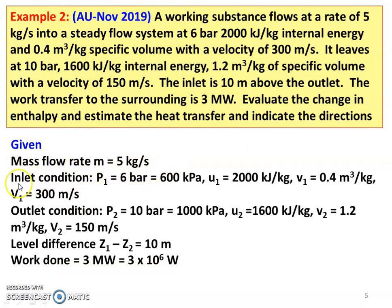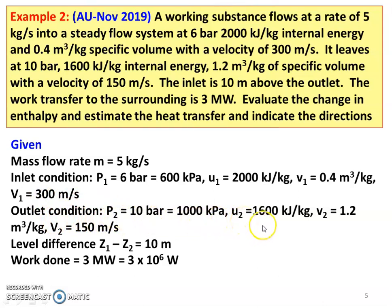Given data: mass flow rate M equals 5 kilograms per second. Inlet condition: P1 equals 6 bar, 600 kilopascal; internal energy U1 equals 2000 kilojoules per kilogram; specific volume 0.4 meter cube per kilogram; inlet velocity 300 meters per second. Outlet condition: P2 equals 10 bar, 1000 kilopascal; internal energy U2 equals 1600 kilojoules per kilogram; specific volume 1.2 meter cube per kilogram; velocity 150 meters per second. Z1 minus Z2 equals 10 meters. Work done equals 3 megawatt, which is 3 into 10 power 6 watts.